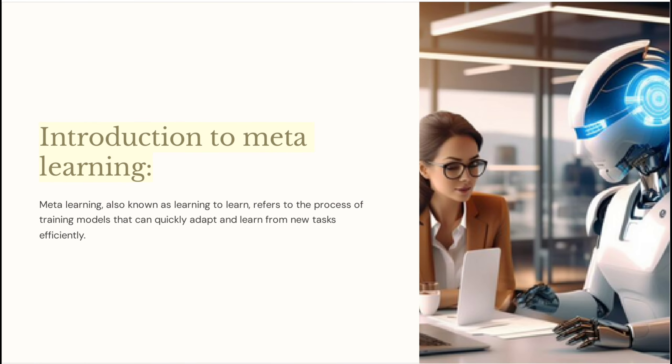Introduction to Meta-learning. Meta-learning, also known as learning to learn, refers to the process of training models that can quickly adapt and learn from new tasks efficiently.